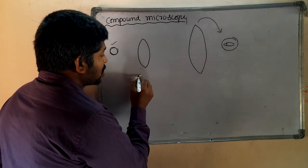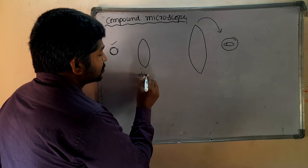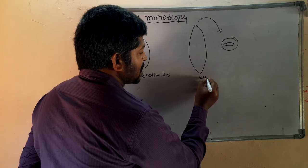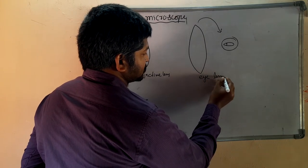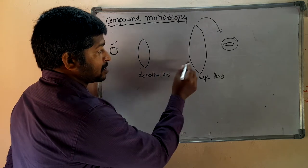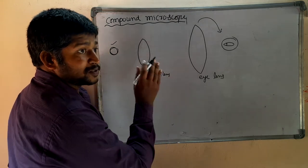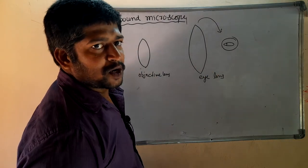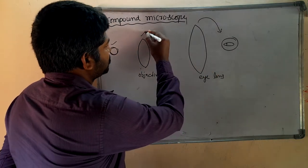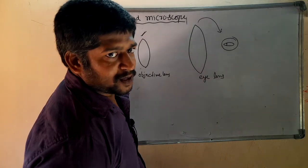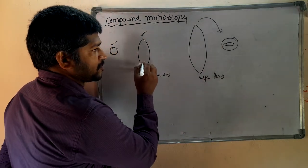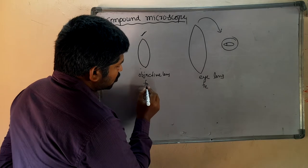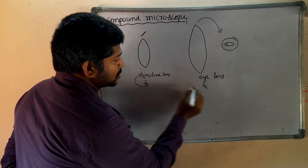That is why the lens near the object is called the objective lens, and the lens near the eye is called the eye lens. The focal length of the objective lens is taken as F₀, and the focal length of the eye lens is taken as FE — where O means objective and E means eye.